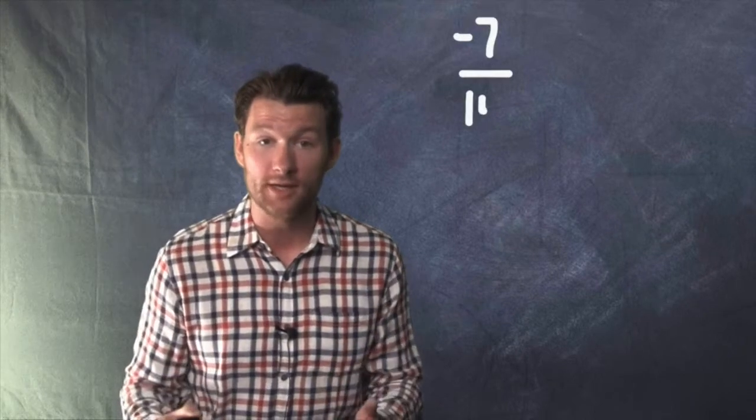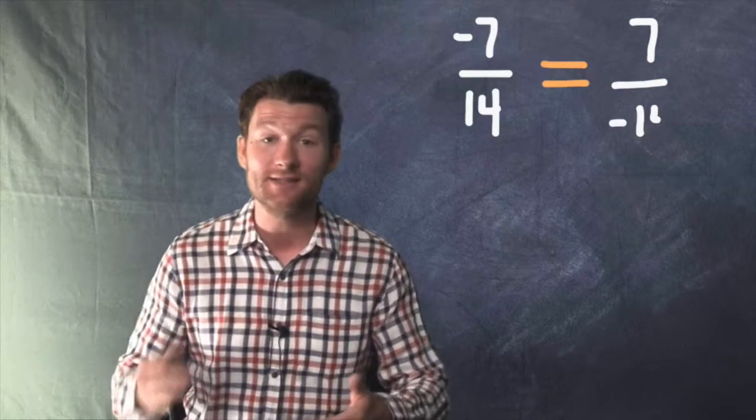Let me give you one more example. Negative 7 over 14 is the same thing as 7 over negative 14. Because it doesn't matter if the negative sign's on the top or the bottom.